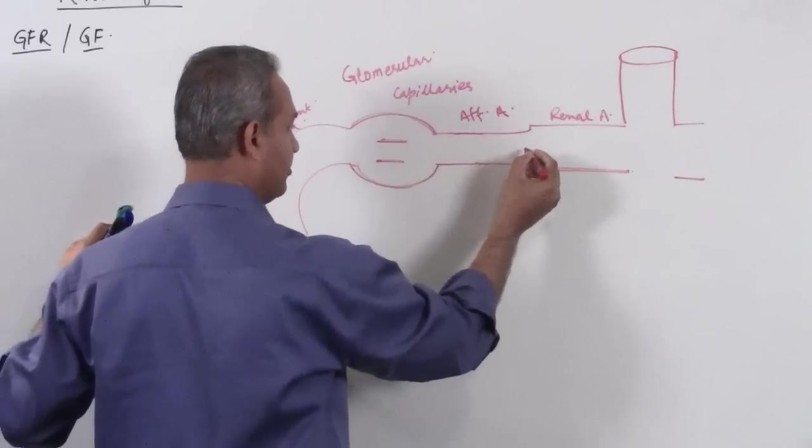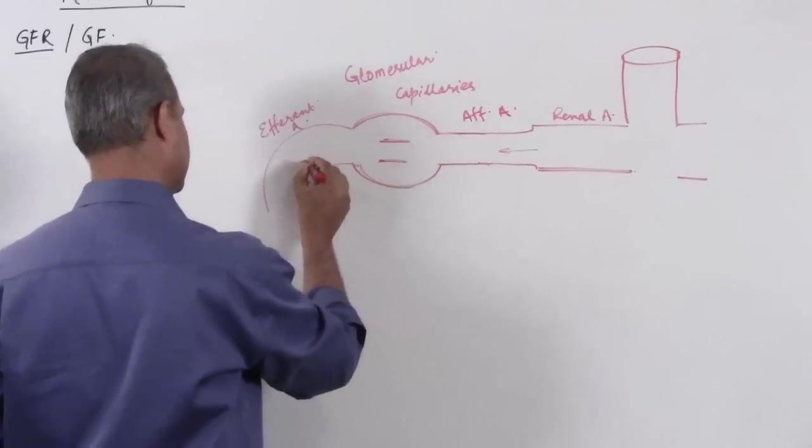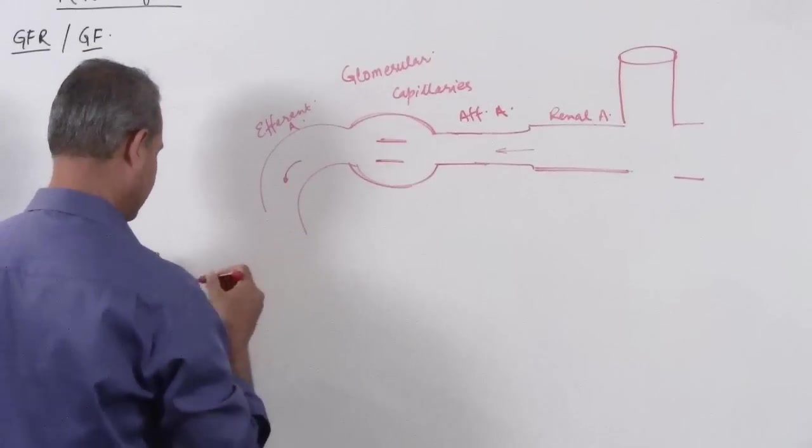So afferent arteriole is the one where blood arrives to the kidney and efferent arteriole is where the blood is now going towards the second set of peritubular capillaries.